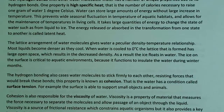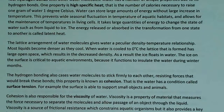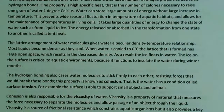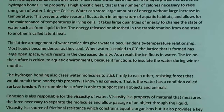Hydrogen bonding also causes water molecules to stick firmly to each other, resisting forces that would break these bonds — a property known as cohesion. Water also has surface tension: if you sit by a pond and see a bug standing on the surface of the water, that's because of this surface tension. The surface is able to support small objects and animals, which goes back to the property of cohesion — water molecules sticking firmly together by hydrogen bonds.